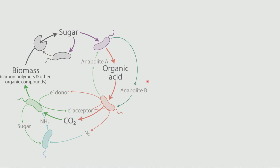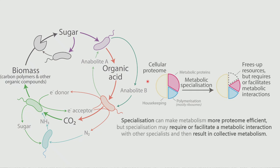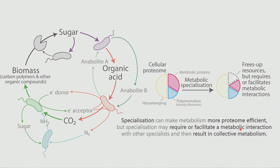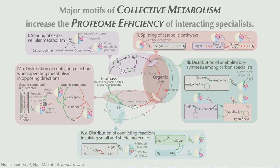So how does it link back to predicting the structure of collective metabolism? The point we want to make is that metabolic capacities are distributed among specialists; cells specialize because this makes them more proteome efficient; and then in certain ways of specializing, this entails or facilitates a metabolic interaction, which then underlies the sort of collective metabolism. This is basically the main result of all this work — a first tiny step toward predicting the structure of collective metabolism from the knowledge we currently have on microbial physiology.